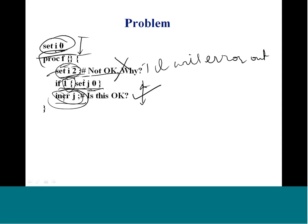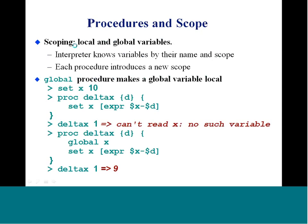So how do we get I into the procedure? One quick way is to pass it as an argument — once it's in the argument list, it's fair game. But oftentimes we cannot do that. Tcl provides a rich command set for this. There are local and global variables, and the interpreter knows variables by name and scope. Each procedure introduces a new scope.